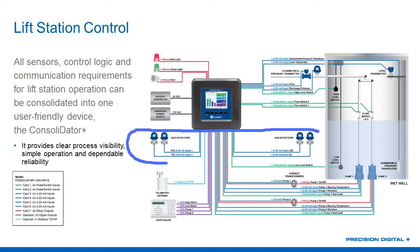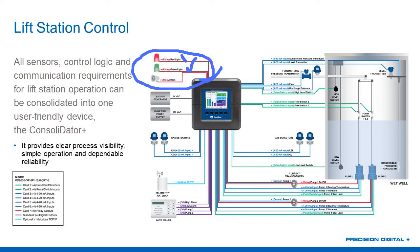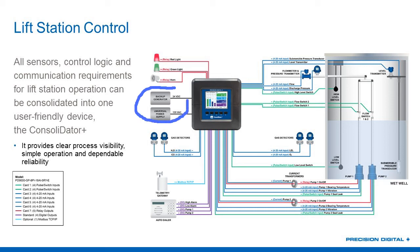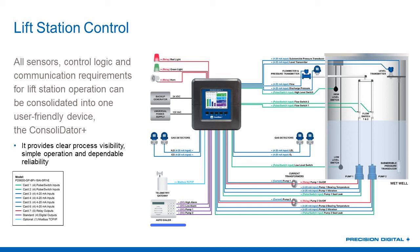We've got four gas detection units that are also all bringing 4 to 20 milliamps into this single unit. If any of these detect a problem, we've got a red and green light and horn on there — green lets me know everything's okay, red tells me there's a problem, and the horn will go off when that red light goes off, so somebody has to come over and acknowledge it. This is powered by 24 or 120 volts AC — it's actually got both power inputs on every Consolidator Plus. Generally in this application we're using 120V, but if that line fails, we've got a backup 24 volts also connected. We've got our Modbus TCP/IP connected to our telemetry gateway so we can pull information out and view it remotely, and we've got our digital outputs going to an auto dialer so we can send messages when something's going on in the field.